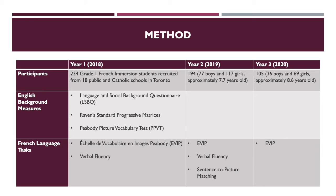To assess French language development, EVIP tested receptive vocabulary, verbal fluency tested word production, and sentence to picture matching tested comprehension. Since data collection was disrupted by the current pandemic, there is not enough verbal fluency data to analyze in year three, so the smaller sample of 105 students only included those who were able to complete EVIP in years one, two, and three.